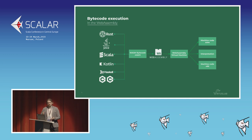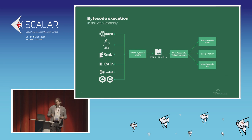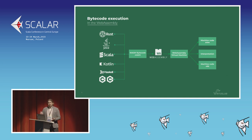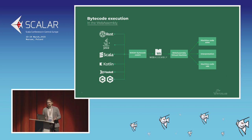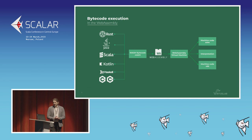A lot of languages are already capable of targeting WebAssembly. The main language here is Rust, which is the primary platform. But also C and C++, C#, recently even Haskell, and Kotlin Native with its new initiative. So how about Java and Scala? We will talk about it in a second, and I will show you some examples — not live coding, but some higher-level stuff.